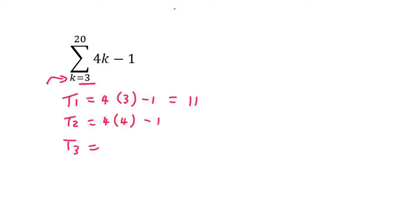Then you just increase by one each time. And that'll be 15. And then four times five minus one, and that'll be 19. So there we have the first three terms.